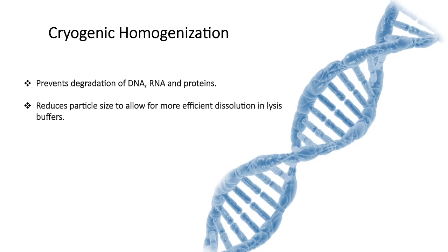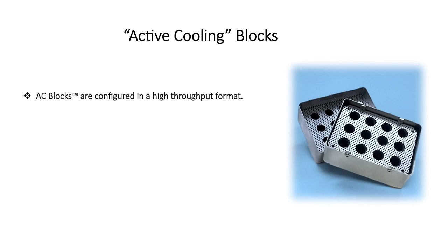Cryogenically grinding samples reduces the shearing force and temporarily inactivates nucleases that normally degrade and break down biomolecules. AC blocks offer a high throughput alternative to traditional methods of sample disruption.